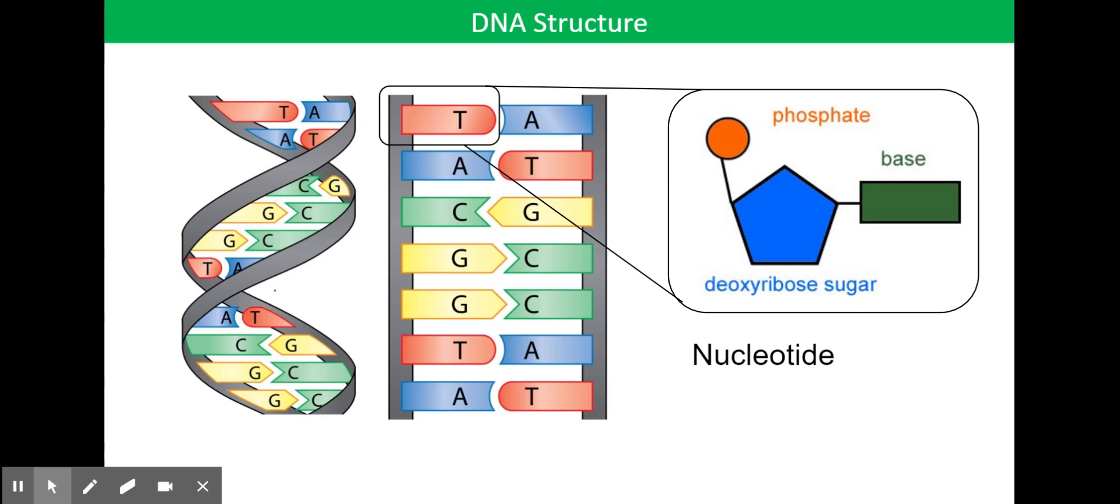And the two strands of the DNA are held together by hydrogen bonds between the bases. So A and T always form two hydrogen bonds, and C and G always form three hydrogen bonds. So it's hydrogen bonding that's holding the ladder together. And we've got that sugar phosphate backbone acting as the upright structures in the ladder.